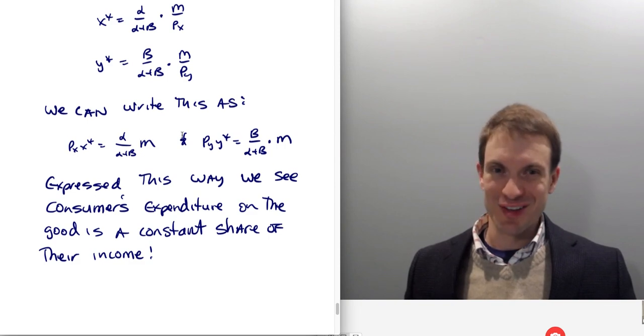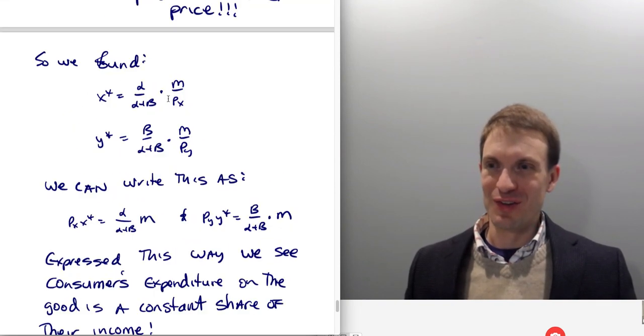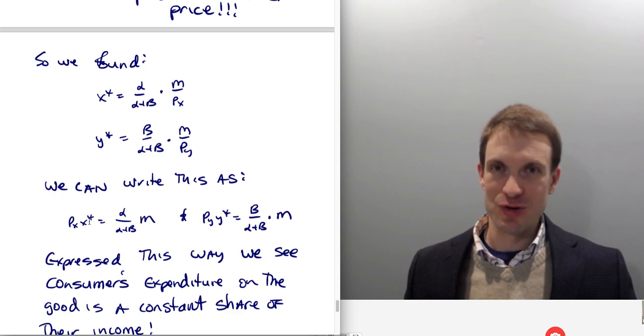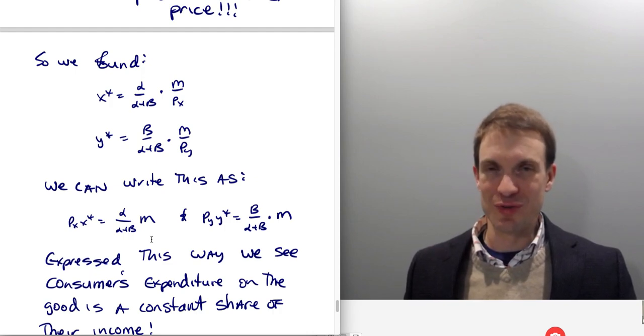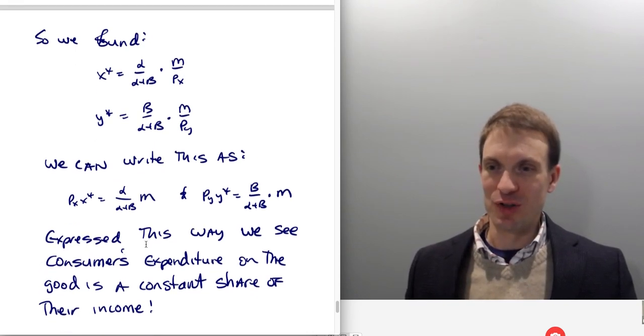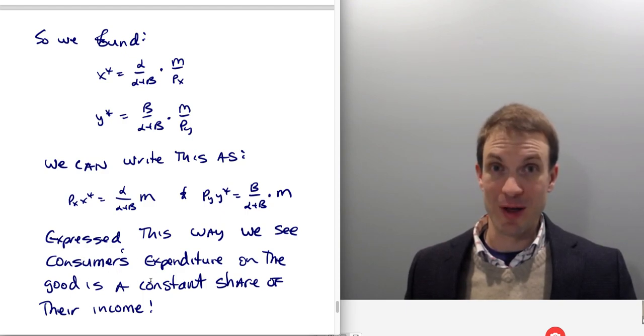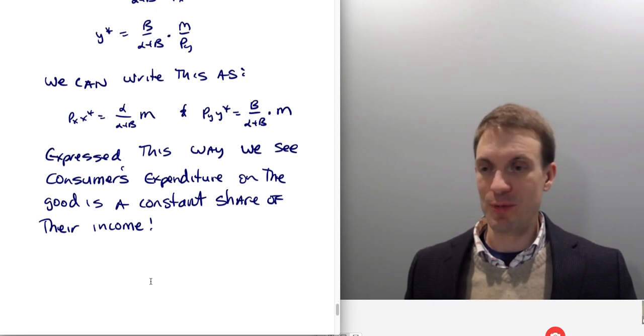So what we did is we found our generic demands. We can write them actually in this really interesting format. So let me go back. Let me take my generic demands and multiply it through by PX here and multiply by PY here. And this gives me my optimal expenditure of X as a share of my income and my optimal expenditure of Y as a share of my income. Because look, here's my income. This is a fraction, the complementary fractions. I'll show you this with a numeric example and become clear, but expressed this way, we see the consumer's expenditure as a good, as a constant share of their income. That's special. That's unique to Cobb-Douglas. That doesn't happen with every type of preferences.